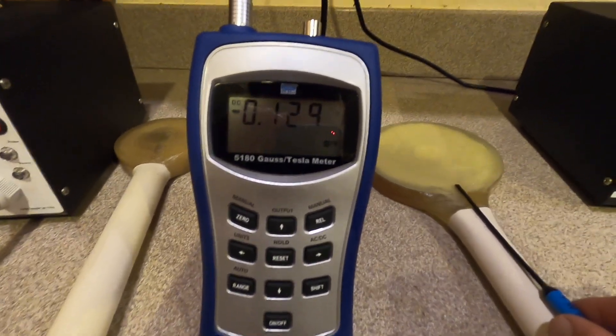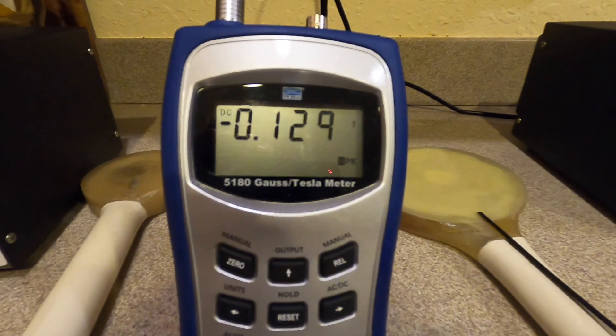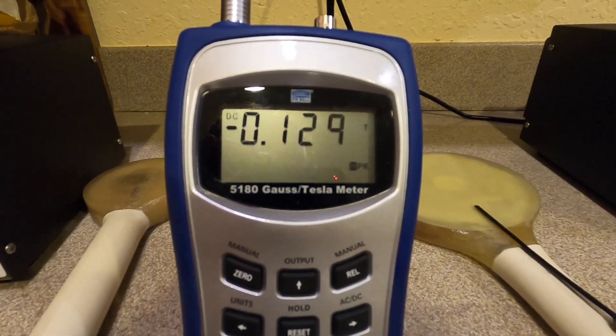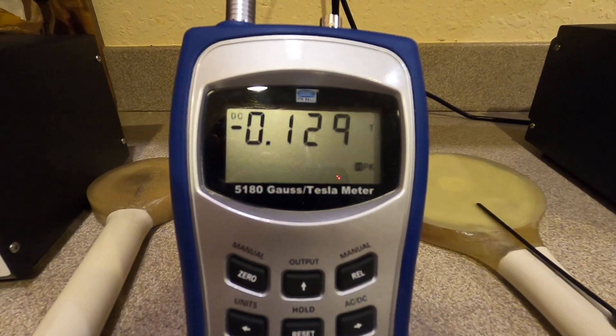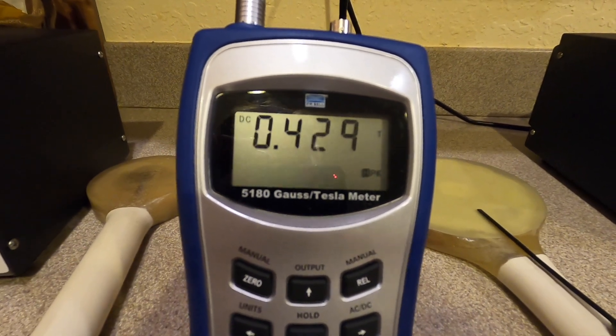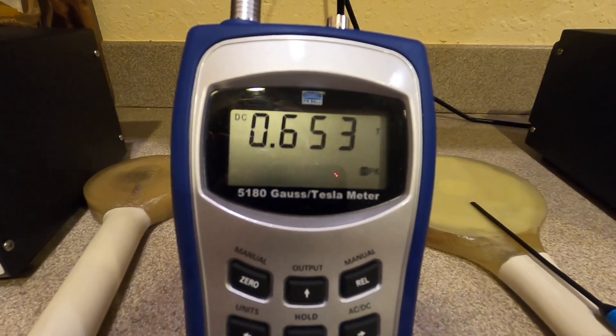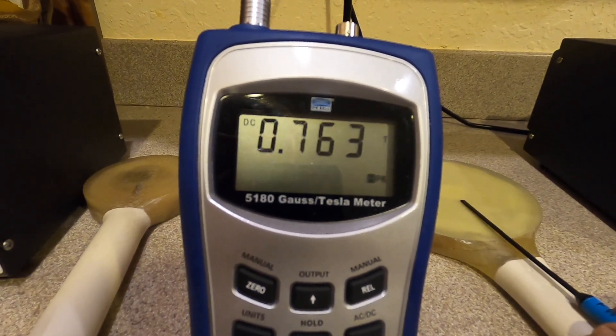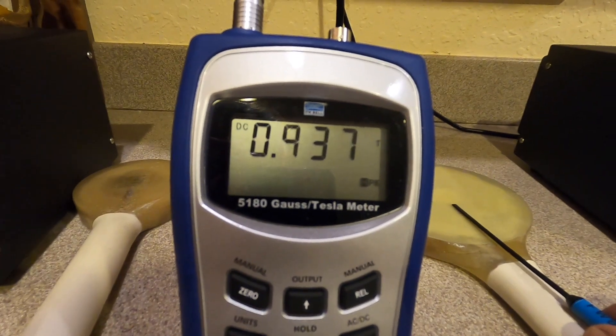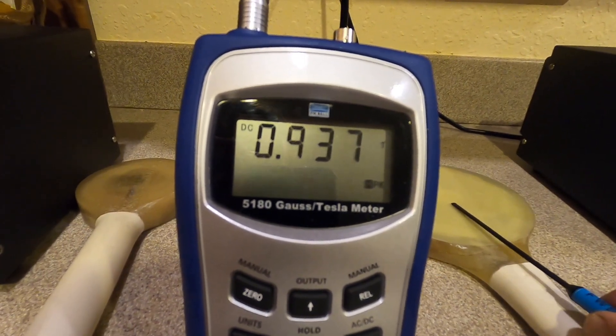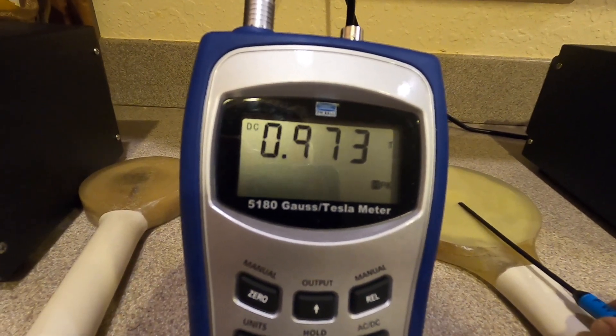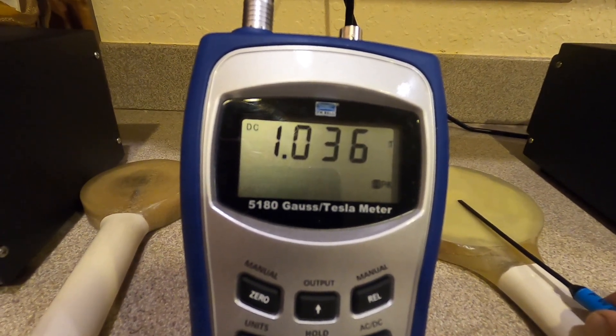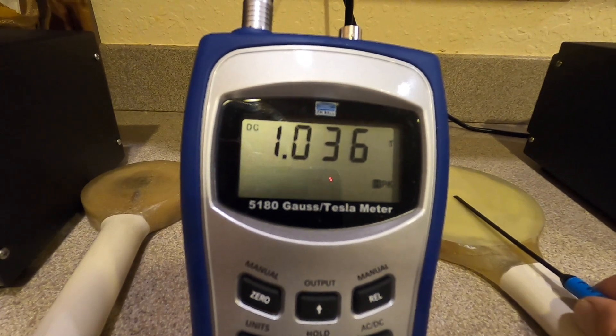I'm gonna move it to inside of the coil, we're gonna take some readings. Go deeper: 0.4 Tesla. Going deeper: 0.6 Tesla, 0.7 Tesla, 0.9, 0.97, 1.036 Tesla, 0.7 Tesla, 0.7 Tesla as I go deeper.